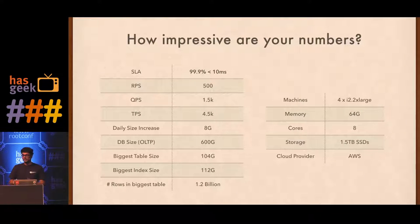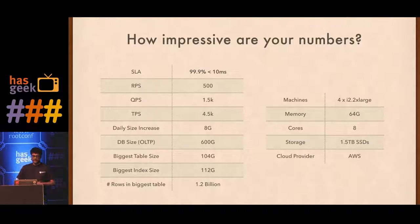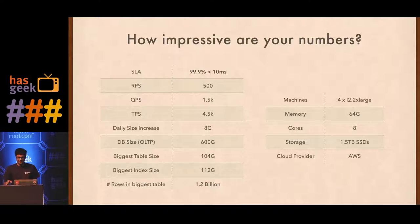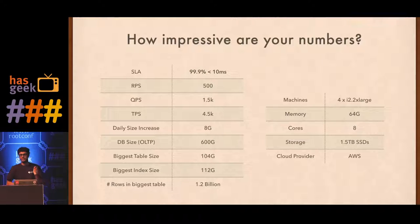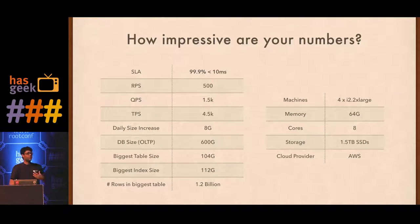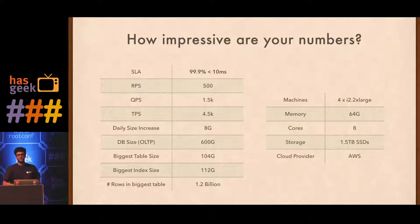Here are our numbers: we have an SLA where 99.9% of requests have to be served under 10 milliseconds, and we have a transaction rate of around 4,500 per second. This is very sizable for a real-time transaction database that is about 600 gigabytes. Our biggest table, which we report on and write to quite often, is just above a billion rows. All our databases run on EC2, on I2 x-large instances, backed up with provisioned IOPS.